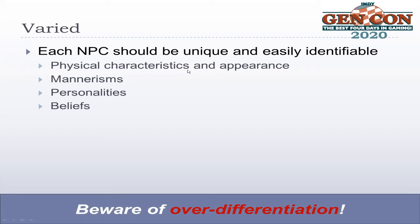How do you differentiate NPCs? It could be physical characteristics: color of hair, color of eyes, something special about their appearance, an article of clothing. For incidental ones, that may be enough. Or it could be some kind of interesting mannerism — this particular NPC smokes a pipe and whenever they get nervous, they bang their pipe along their ankle. Or maybe they've got a tick. For deliberate ones, they may have specific personalities and beliefs that guide their actions.